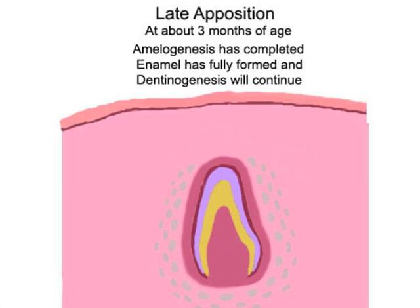At this stage amelogenesis has finished. The ameloblasts are programmed to die; thus the enamel can no longer form, whereas the dentin continues to form throughout the life of the tooth.